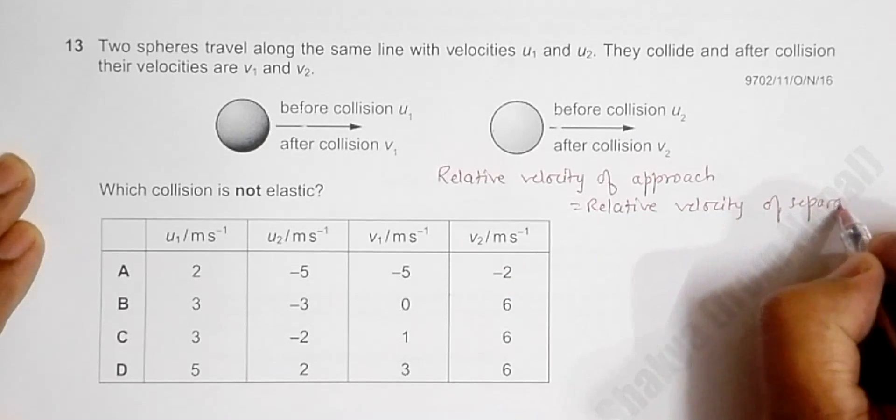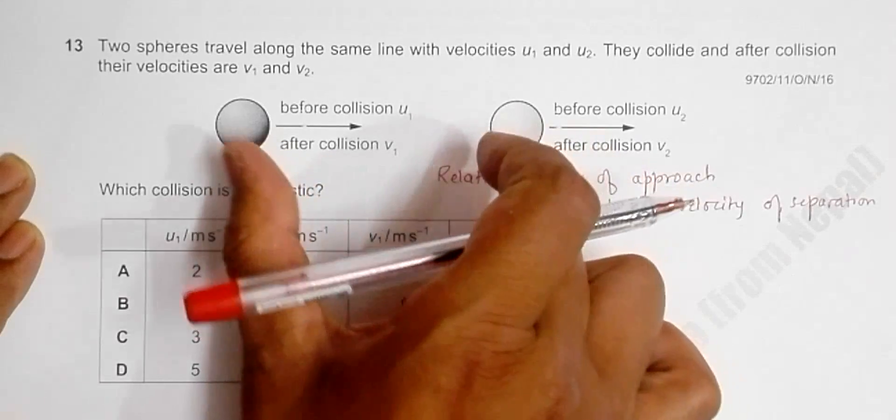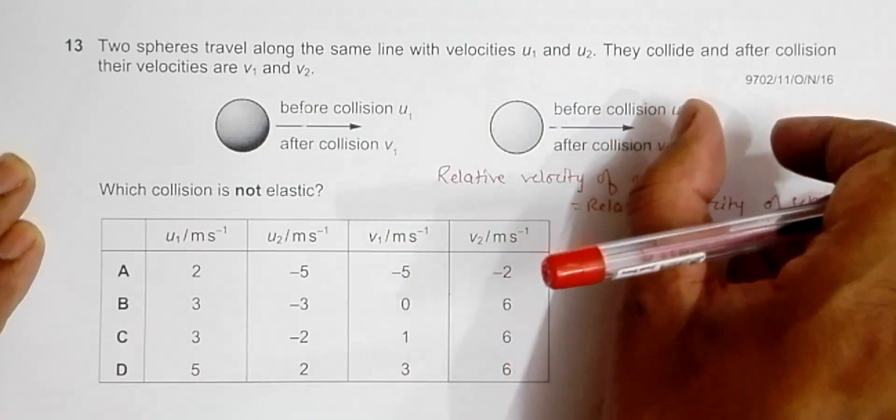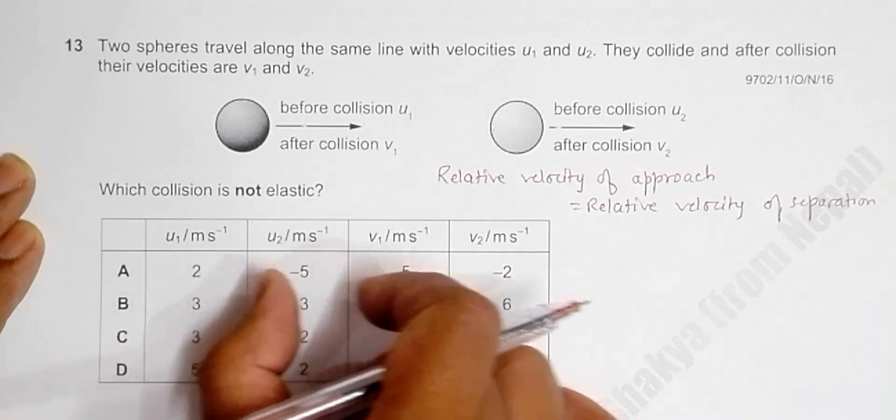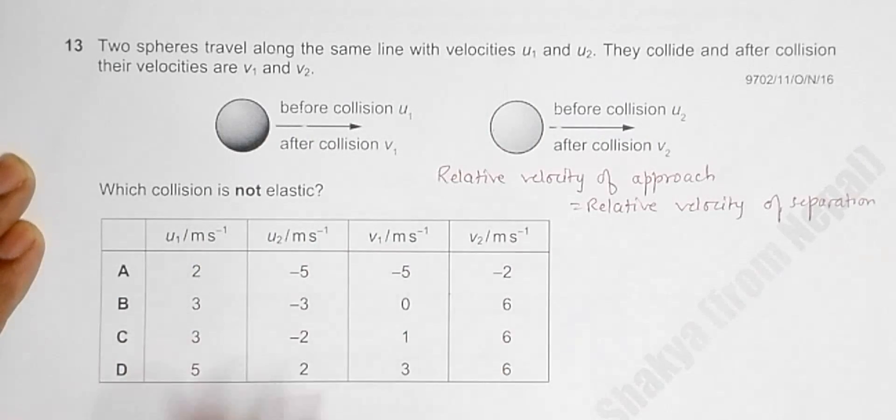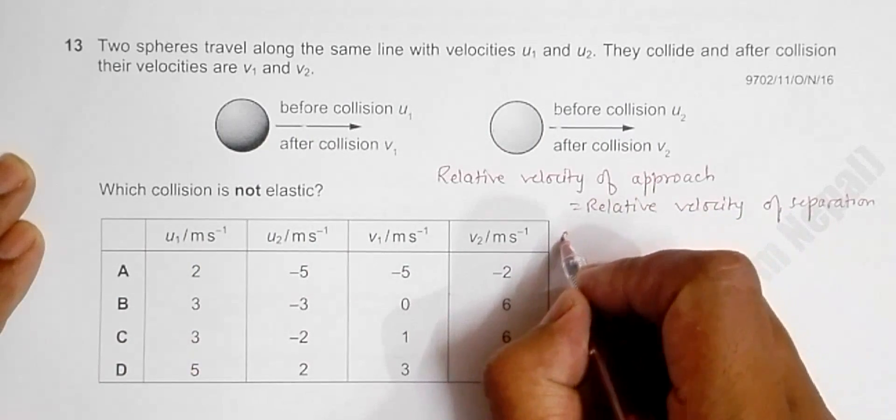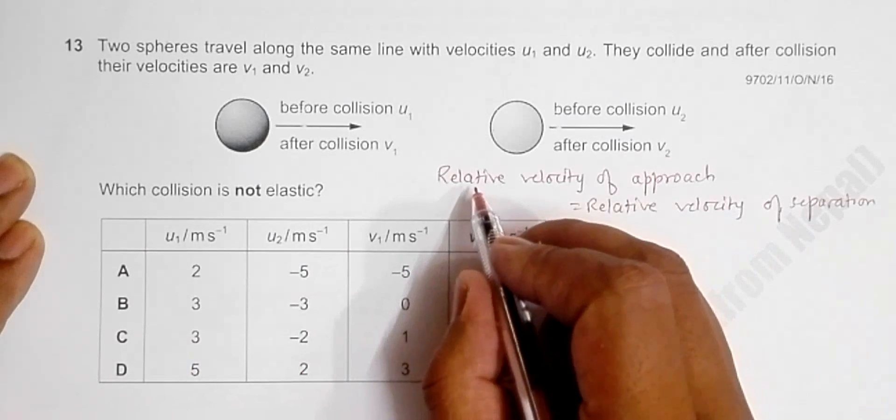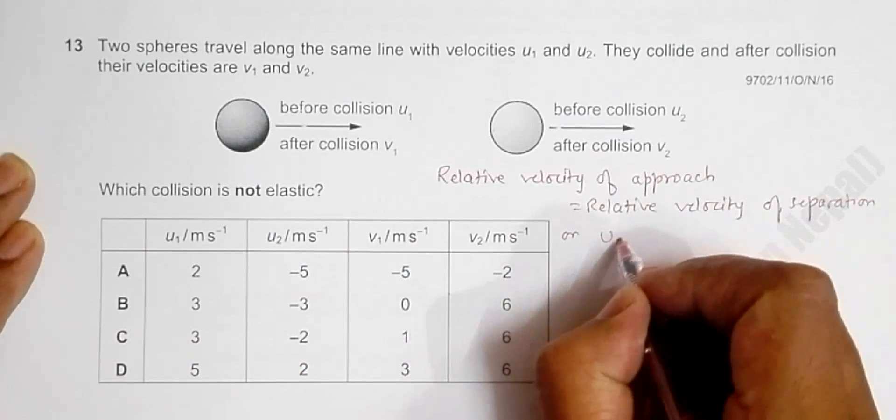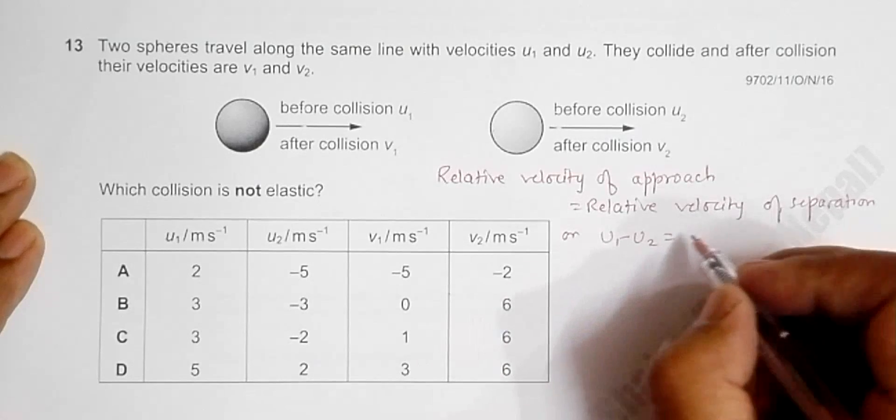That means the rate at which the two bodies get near before collision should be the rate at which they get far away from each other after collision. The expression for approach is u₁ minus u₂, and for separation it will be v₂ minus v₁.